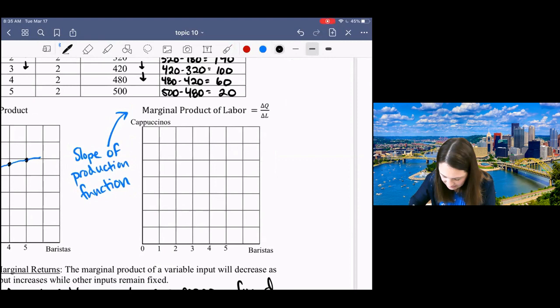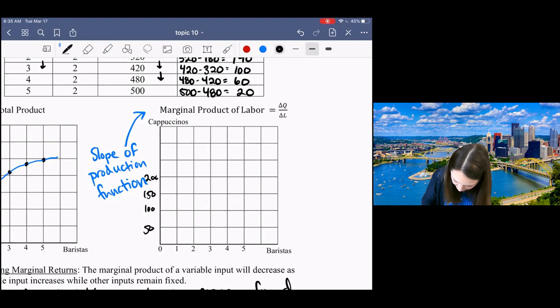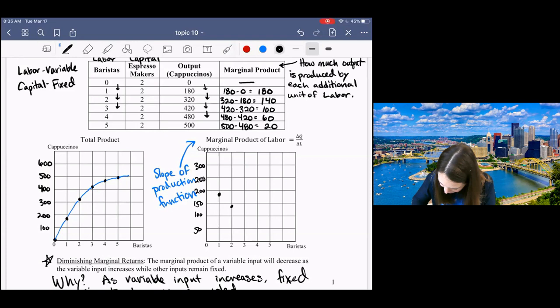But for now, we're really just interested in what's happening to our marginal product of labor. I'm going to label this axis by 50s and then plot my marginal product of labor. So one is 180, two is 140, three is 100, and so on. If I go ahead and connect these dots, what you can see is that your marginal product is decreasing. But we knew that already.